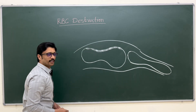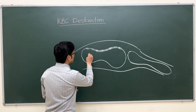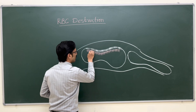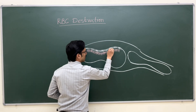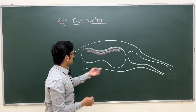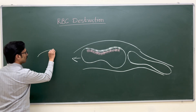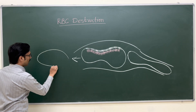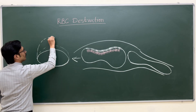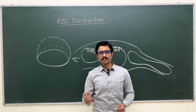The biconcavity of the red cell membrane is lost because of the loss of the cytoskeleton, which is attached to the membrane and keeps it biconcave. With the loss of cytoskeleton proteins, the biconcave shape is lost — it becomes slightly ovoid, elliptical, or spherical.